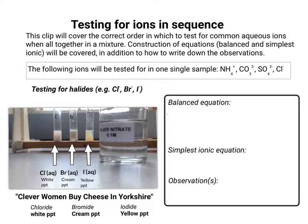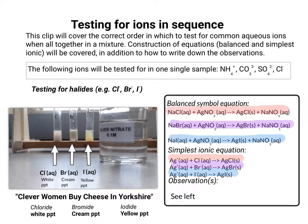The balanced equations and simplest ionic equations for the halide tests are worked out in exactly the same way as before, and are colour-coded. The observations: for chloride, a white precipitate; for bromide, a cream precipitate; and for iodide, a yellow precipitate.